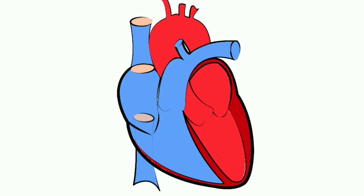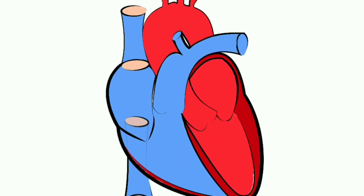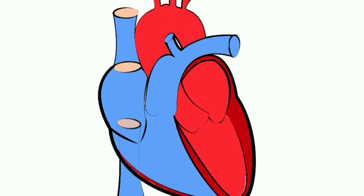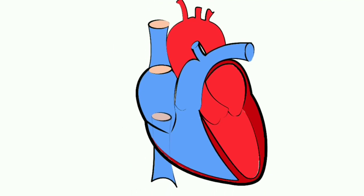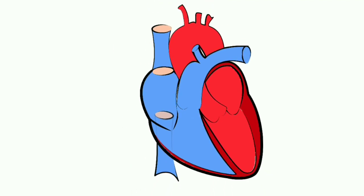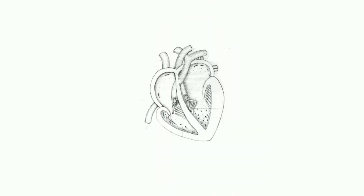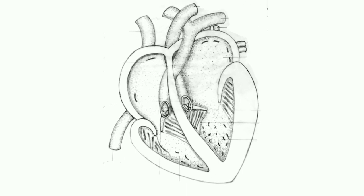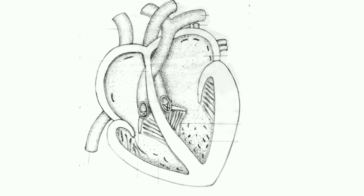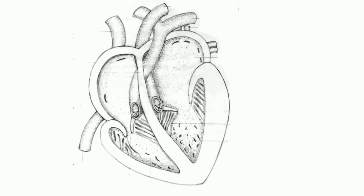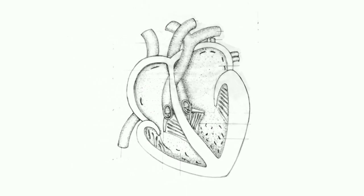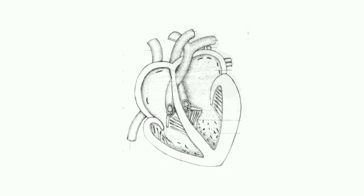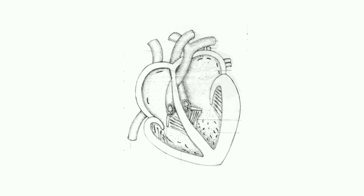The heart is a muscular organ about the size of a fist. It is located under the ribcage to the left of our breastbone and between our lungs. The heart normally beats about 60 to 80 times a minute when it rests, but this can vary. The approximate weight of the adult human heart is between 7 to 15 ounces.